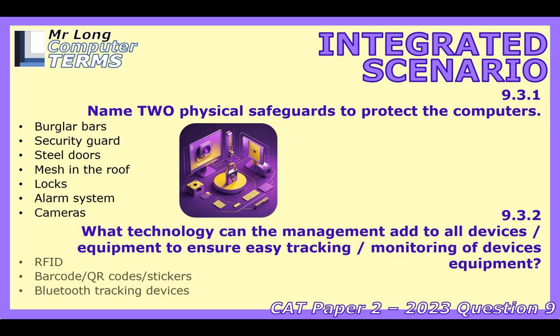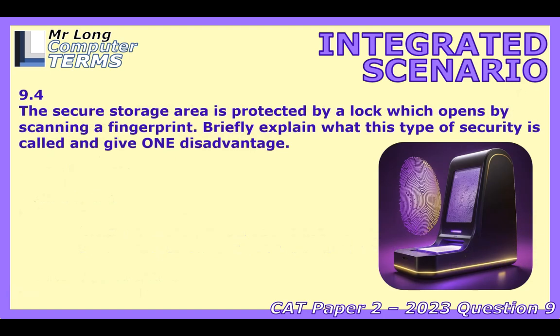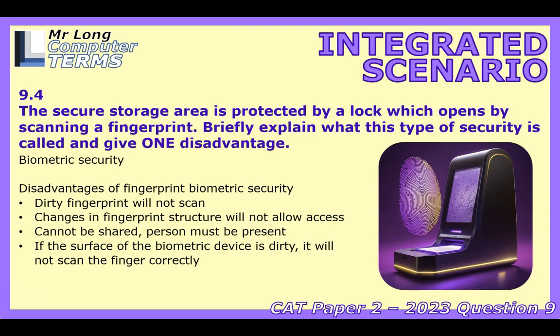The secure storage area is protected by a lock that opens by scanning a fingerprint. The question asks: briefly explain what type of security this is, and give one disadvantage. When you use something unique about your body — like a fingerprint — to unlock something, that's called biometric security. 'Bio' for biological and 'metric' for measurement — you're using unique biological traits for identification to prove it's really you.